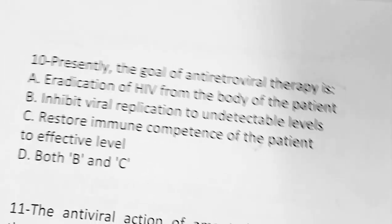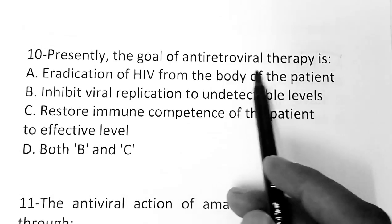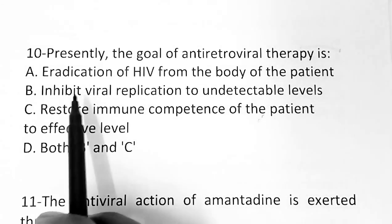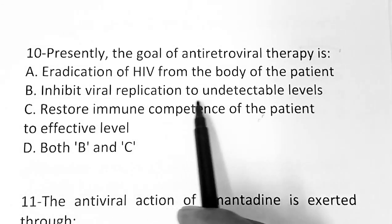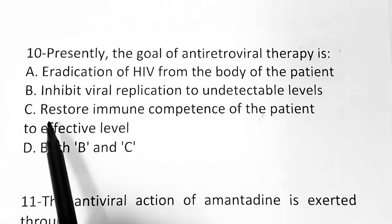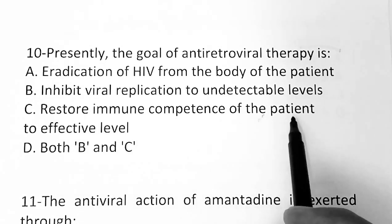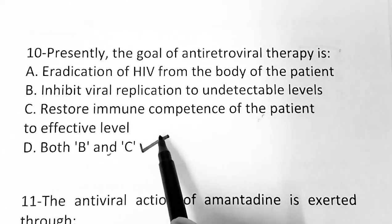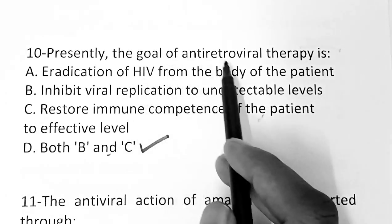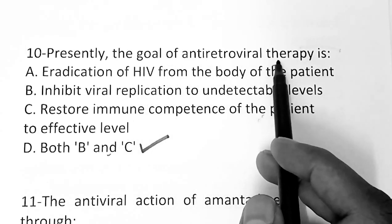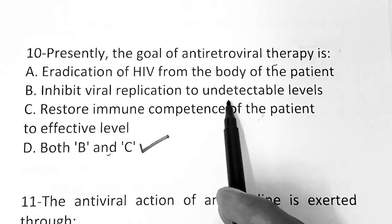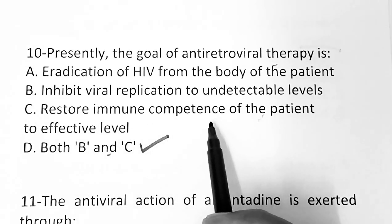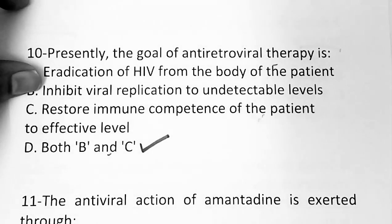Question 10: Presently the goal of antiretroviral therapy is — Option A: eradication of HIV from the body, Option B: inhibit viral replication to undetectable levels, Option C: restore immune competence of the patient to effective levels, Option D: both B and C. The correct answer is both B and C.